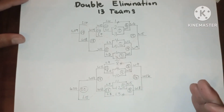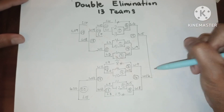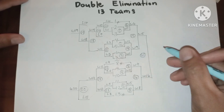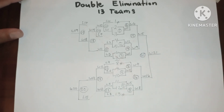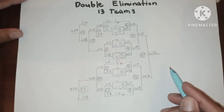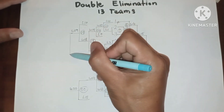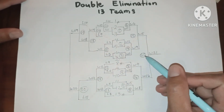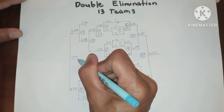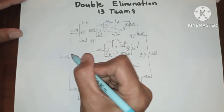Now let us go back to the winners bracket. Winner 15 will be playing against winner 16 in game 21: winner 21. Now let us go back to the losers bracket. Winner 19 will be playing against winner 20 — this will be game 22. Let us have the result: winner 22.